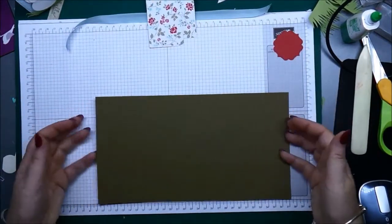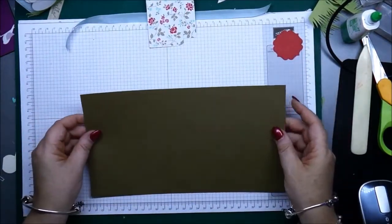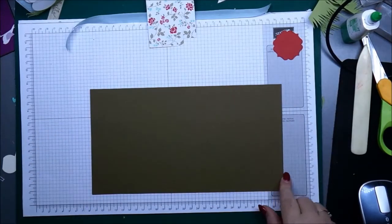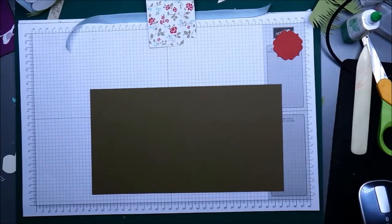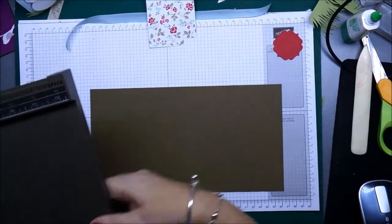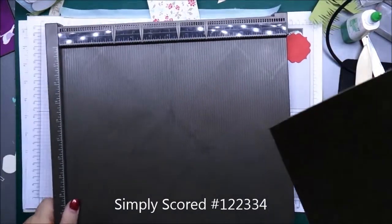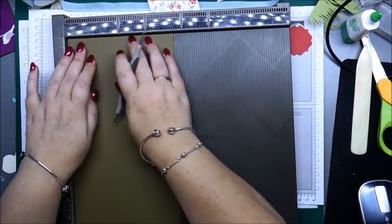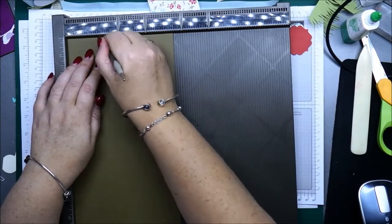This piece here which is your box is eleven inches by six inches. Okay, and we're just going to get our Simply Scored to do our scoring. So we'll do the six inch side first and we're just going to score it at two inches.